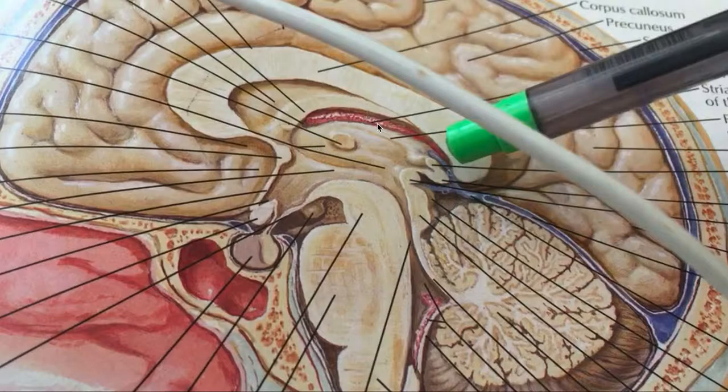It kind of goes around like this. Your fornix kind of goes all the way under. This would be your thalamus here. This would be your interthalamic adhesion, and your fornix would curve around like that. And that's actually how your fornix forms one of the connections in the limbic circuit of Papez.